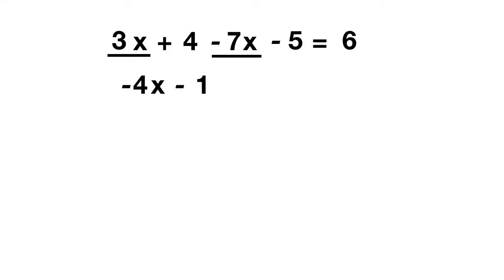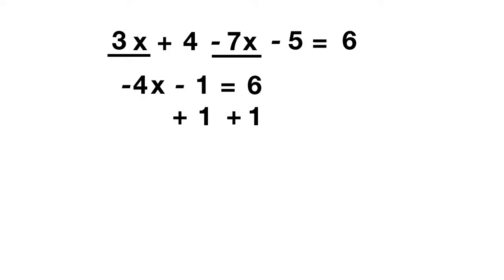Then we combine the plus 4 and the minus 5. 4 minus 5 gives us minus 1. This equation equals 6. To solve, we get rid of the minus 1 by adding 1 to both sides. The minus 1 and plus 1 cancel out, leaving negative 4x. On the other side, 6 plus 1 equals 7.